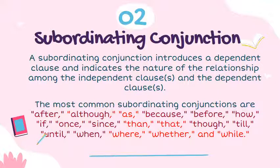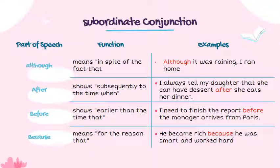The second conjunction type is subordinating conjunction. A subordinating conjunction introduces a dependent clause and indicates the nature of the relationship between independent and dependent clauses. The most common subordinating conjunctions are: after, although, as, because, before, how, if, once, since, then, that, though, till, until, when, where, whether, and while. Here are the kinds of subordinating conjunctions, their functions, and examples.